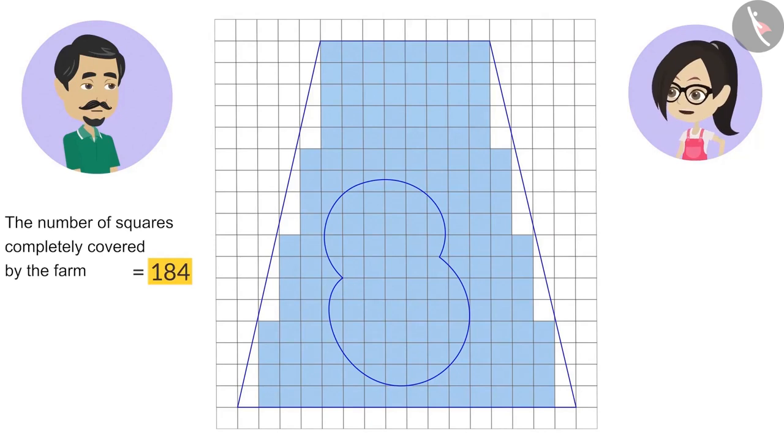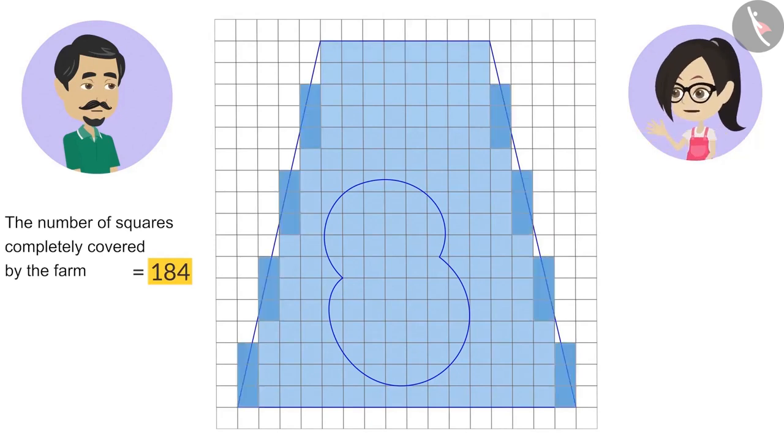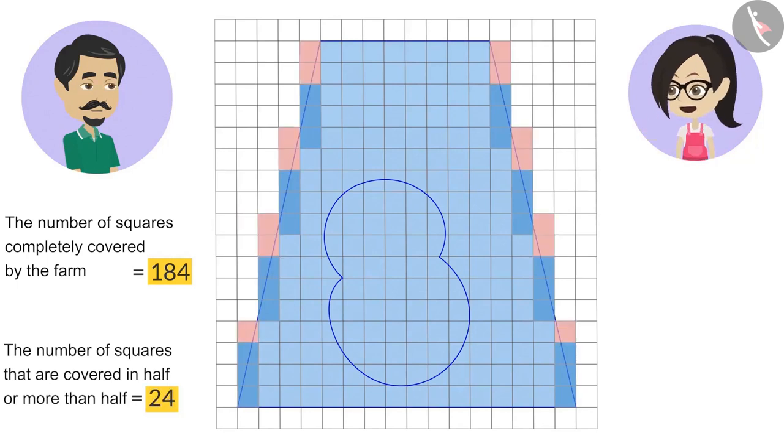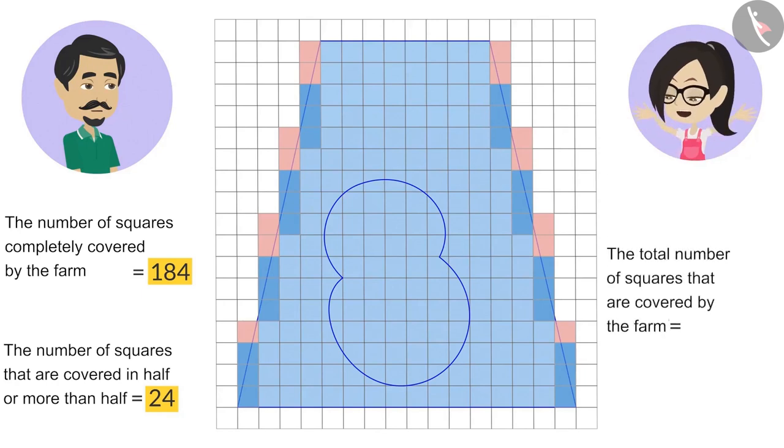Now, we will count the squares that are covered in half or more than half. Their number is 24. Some of the squares are covered in less than half by the farm. We don't count them. That means, the farm has covered almost 184 plus 24 squares. Therefore, this farm covered almost 208 squares.